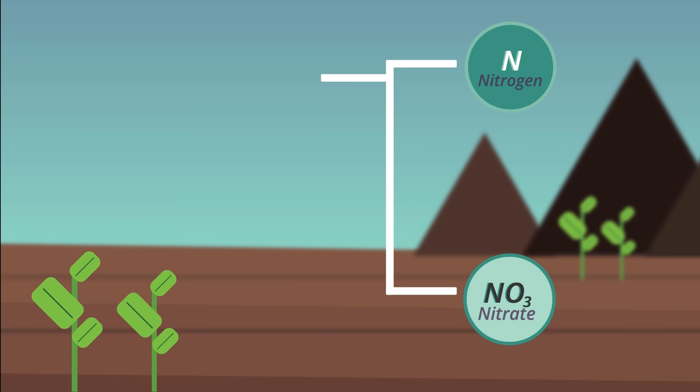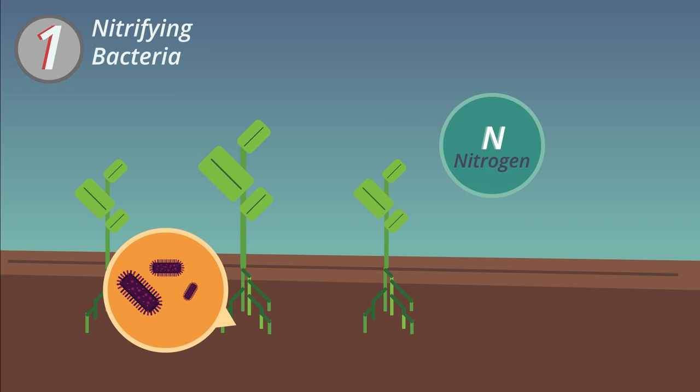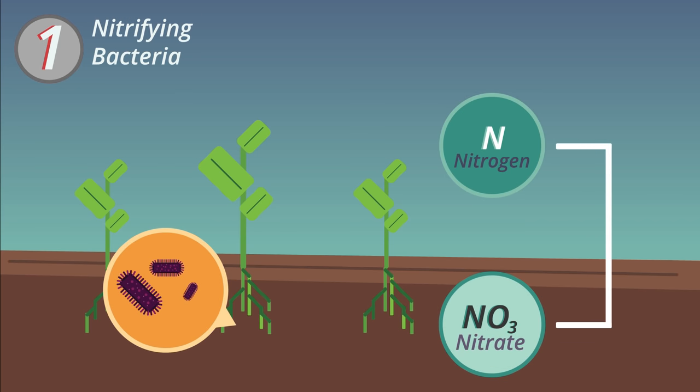The process of nitrogen in the atmosphere being turned into nitrogen in the soils is called fixing. Here are four different ways in which nitrogen fixing occurs naturally. Firstly, nitrogen fixing bacteria in the soil turns nitrogen from the air into nitrates which the plants can then absorb.